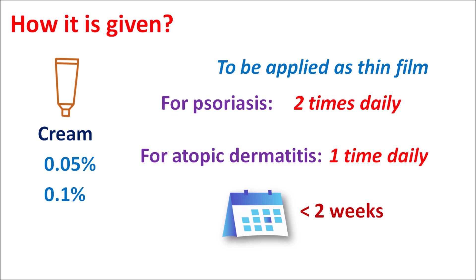Fluocinonide is a topical corticosteroid classified as a potent glucocorticoid. Suppression of the HPA axis is one of the important precautions with this drug, which is why it should not be used in children with age less than 12 years. In adults, it should be used for less than 2 weeks at a low dose, with a maximum of 60 grams per week, to eliminate suppression of the HPA axis. Local skin reactions are important side effects, and fluocinonide can also produce headache and nasopharyngitis.